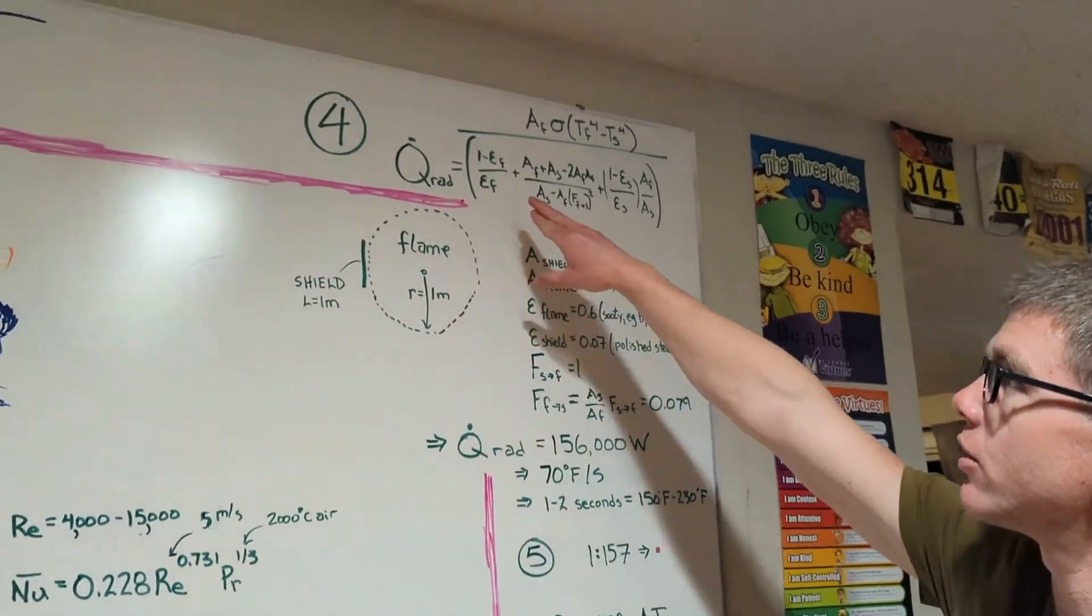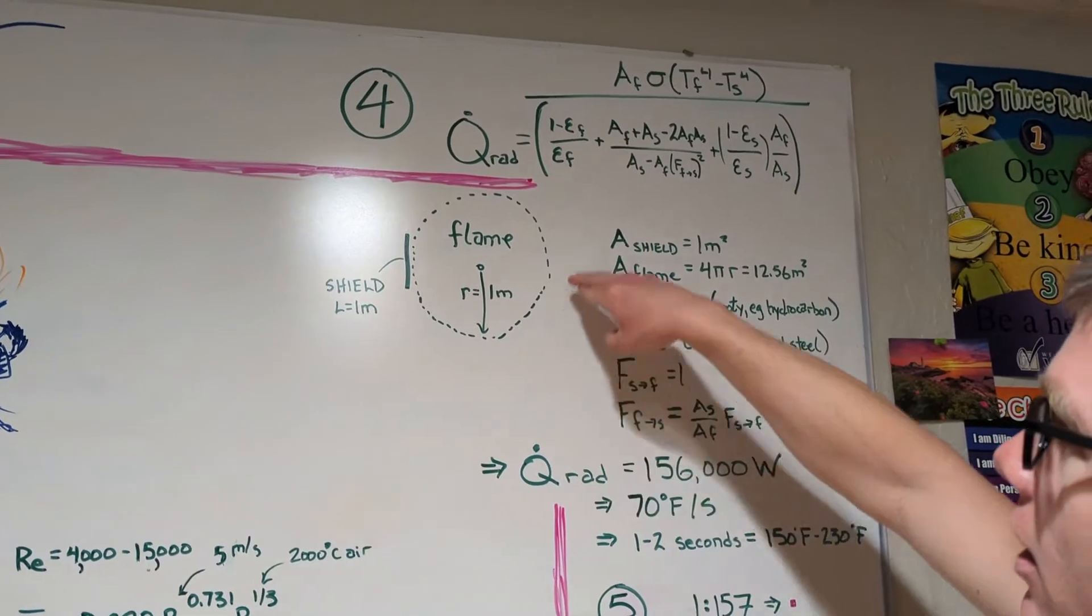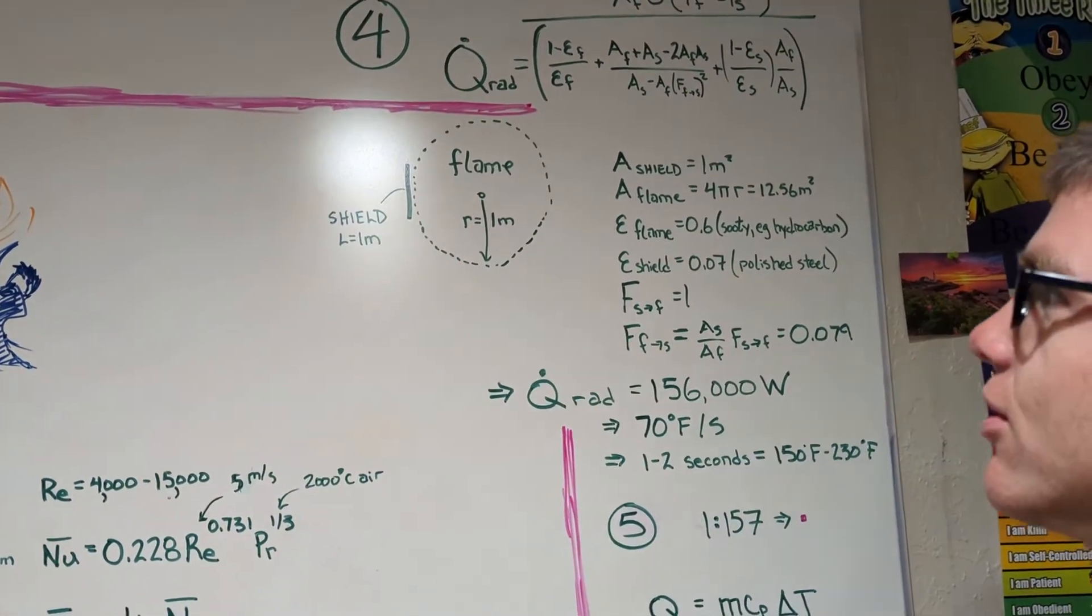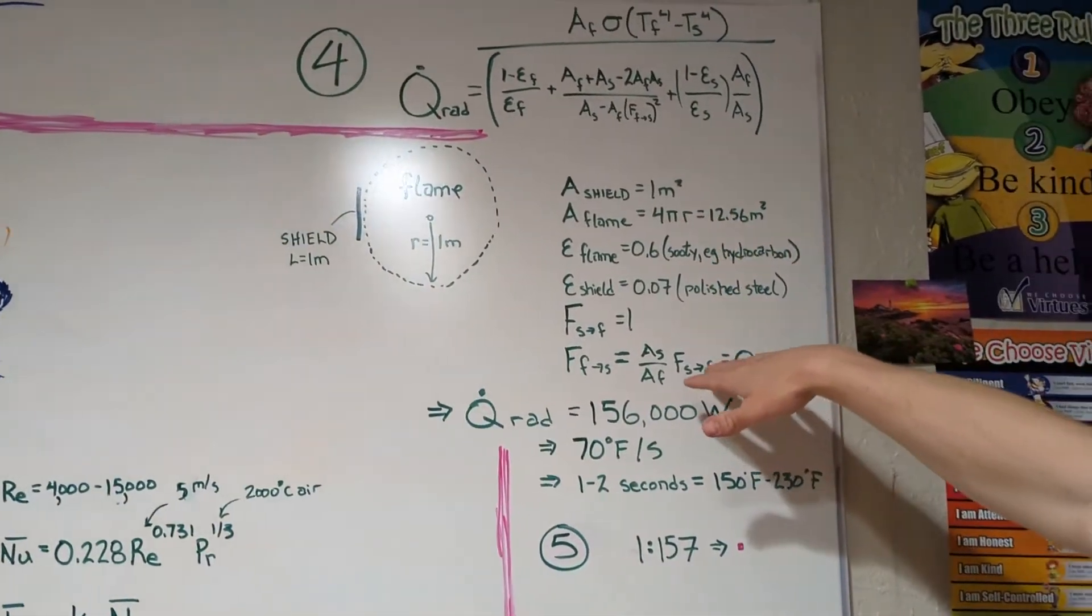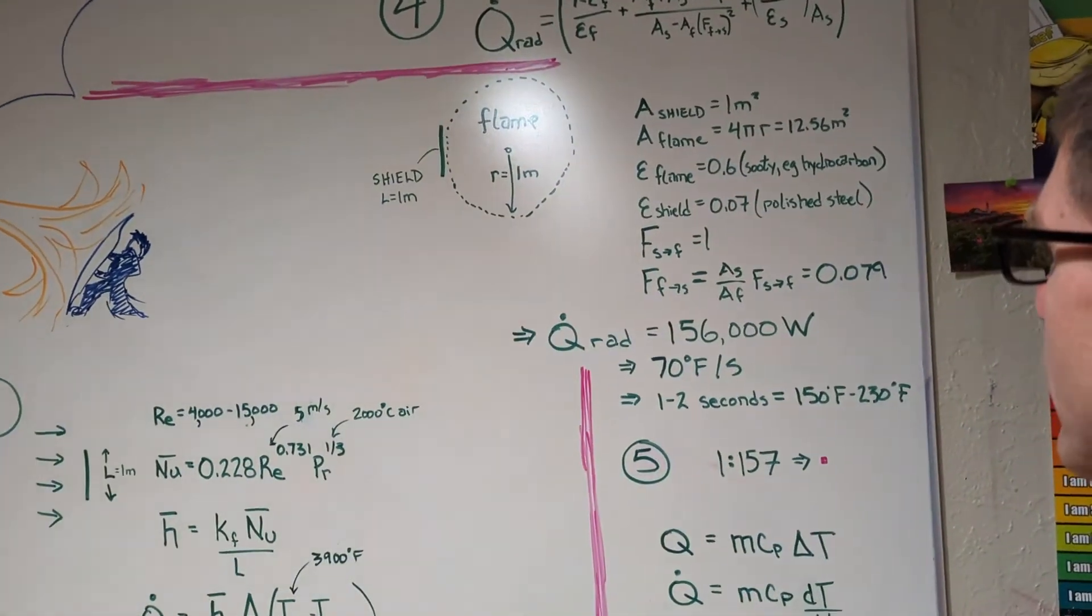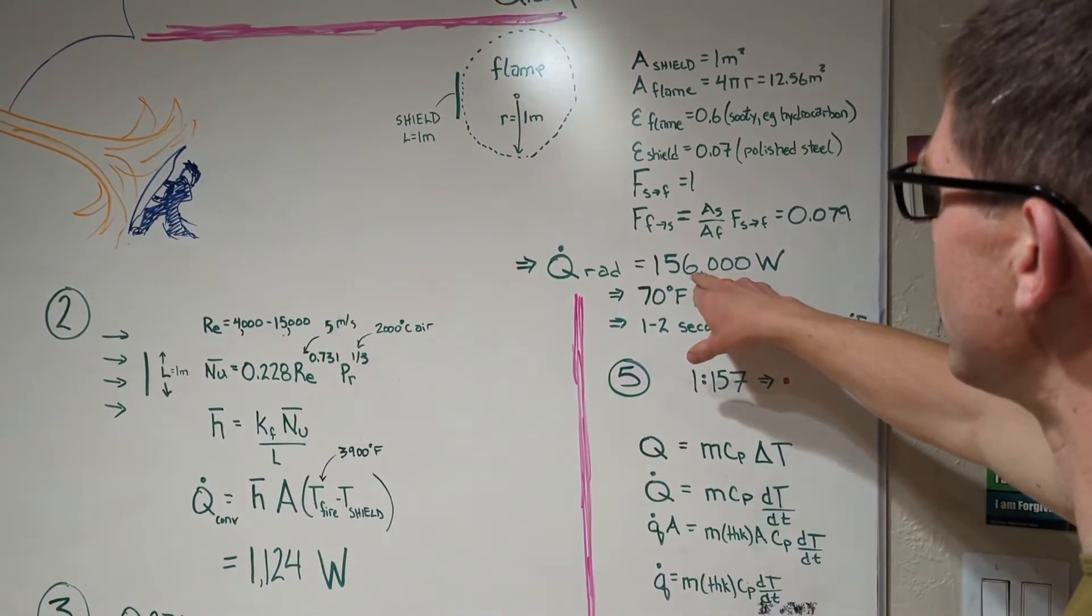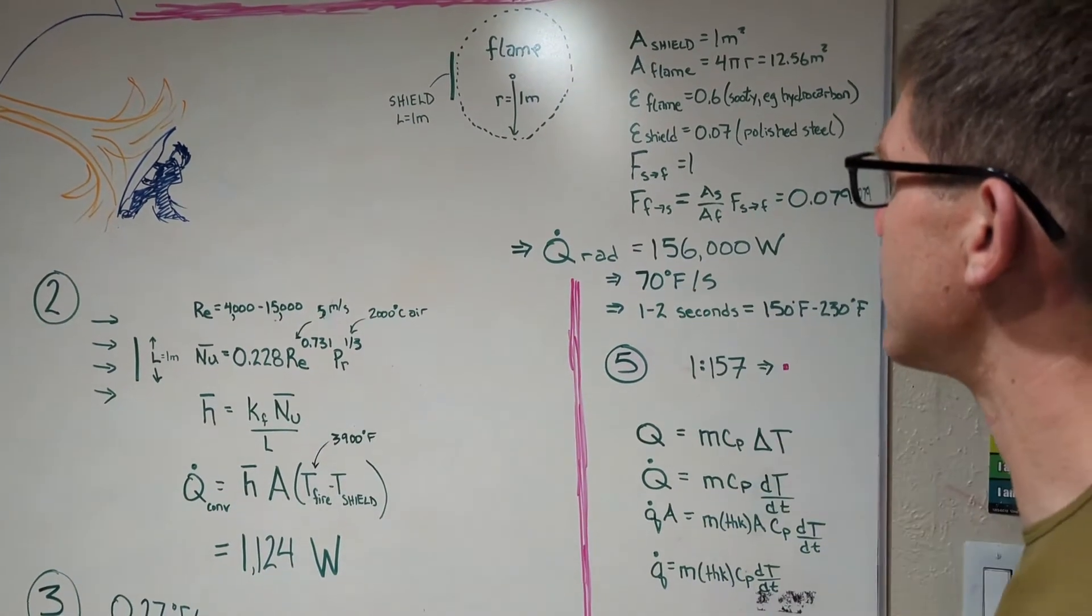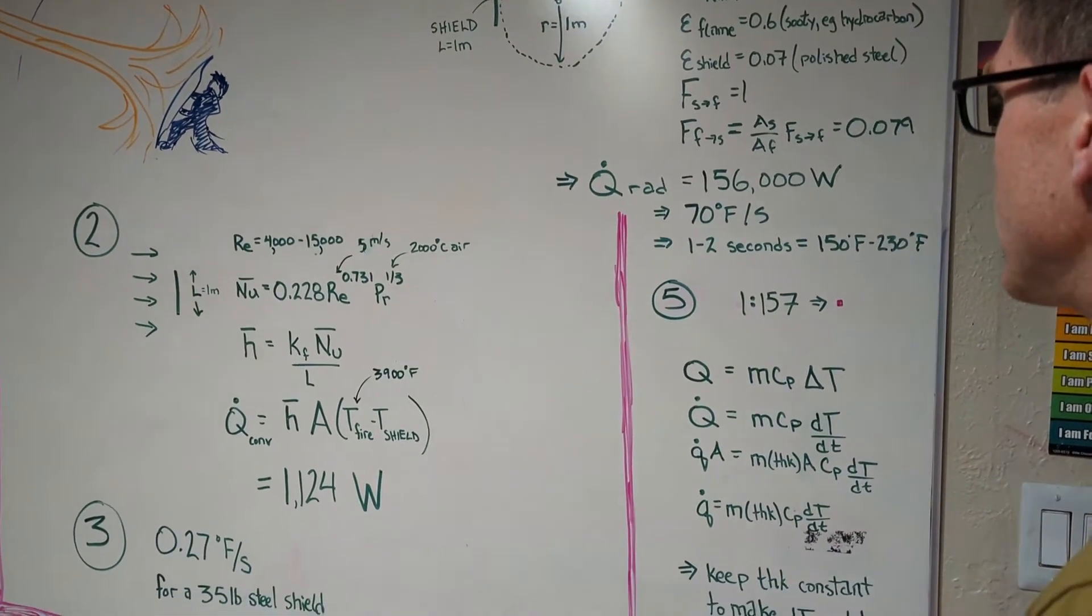In the fourth post though we looked at radiation. It was a little bit harder to analyze. We made some more assumptions. Decided we had a flame that was a fireball of one meter radius with again the shield of one meter length. Went through all the math. Made assumptions on the emissivity of the flame for a sooty flame and a polished steel shield and ended up deciding that radiation would be putting 156,000 watts into that shield which would heat it up by 70 degrees Fahrenheit every second. So in one to two seconds that shield would be too hot to hold.